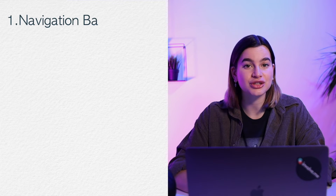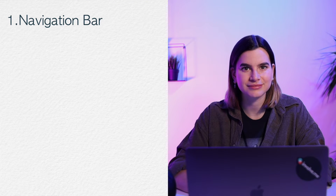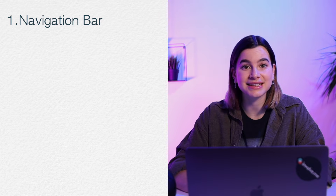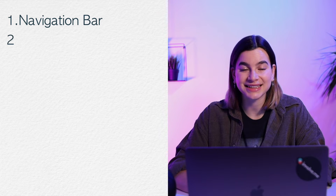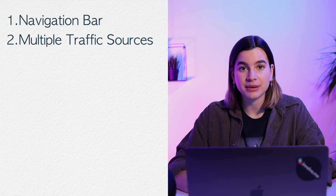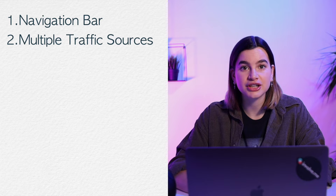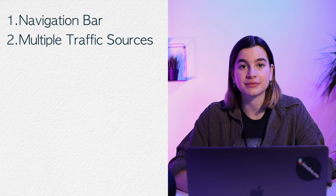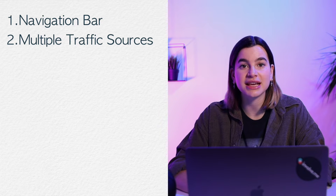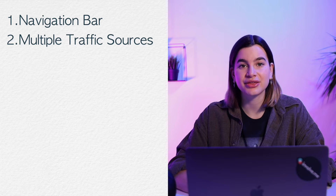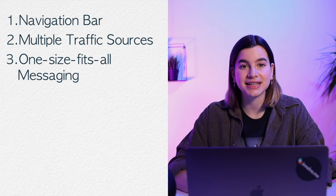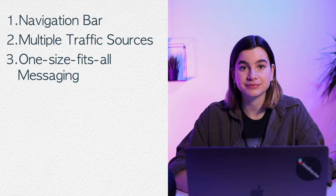Here's a list of things you typically don't find on a landing page. Firstly, a navigation bar — you don't want to give people options. You want them to do one thing, and that one thing is linked in a big bright button. Secondly, multiple traffic sources. While various parts of a website can be accessed through various channels, landing pages tend to be campaign-specific. People land on them after clicking on ads, emails, or CTAs. And thirdly, one size fits all messaging. Landing pages are made for specific campaigns, and all messaging is created to sell one product to a target demographic.